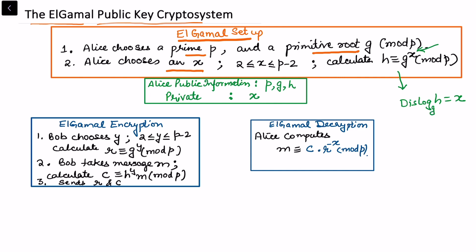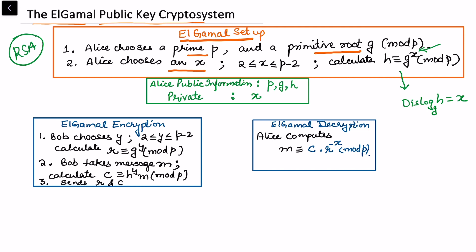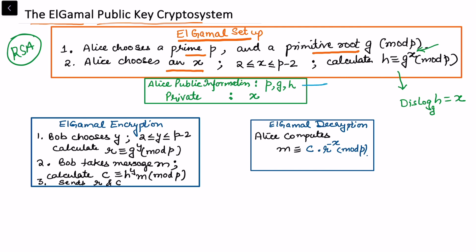Now Alice gives some public information. In fact, this is based on the RSA setup where there is some information which is public and some information which is kept as private. So in the public information, Alice gives p, g, and h as public, and x is kept as private.